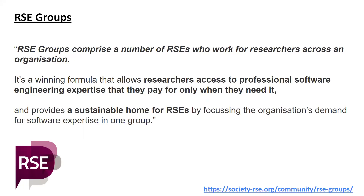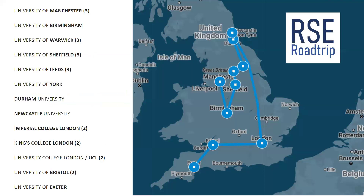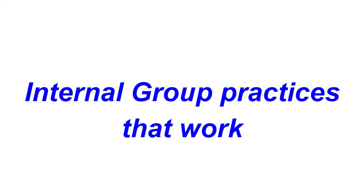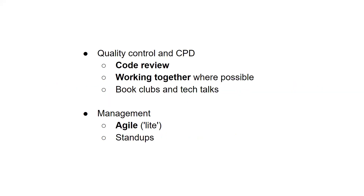RSE groups are basically RSEs that work for researchers across an organization, tend to be part of a comprehensive group, and often work together. Last year I was lucky enough to visit a number of different universities in the UK — 14 different universities — and I interviewed RSEs at 25 different RSE groups. One thing that jumped out was what being in the group helped them in their careers around quality control and continuing professional development: code review where someone else checks your code and makes positive critical suggestions is very valuable. Working together with at least one other RSE on the same code base using version control is an extremely valuable experience and a way of upskilling yourself very fast. And then there are book clubs, tech talks, and other peripheral useful things.